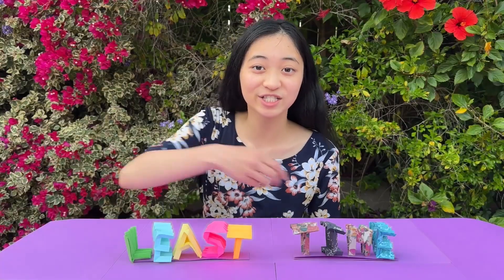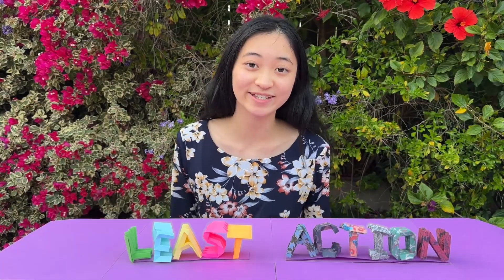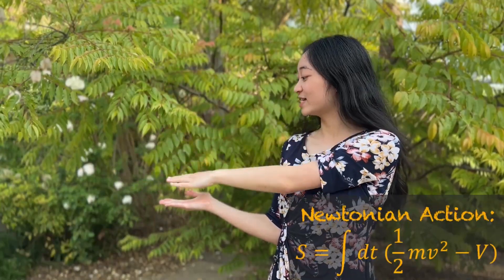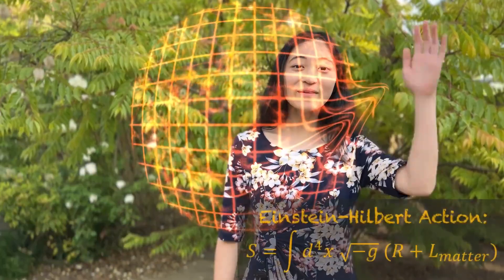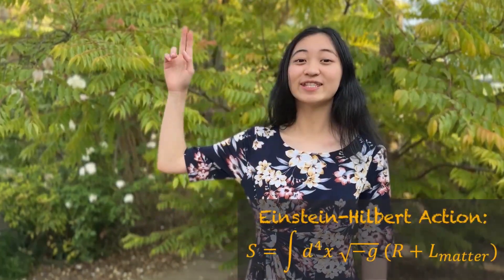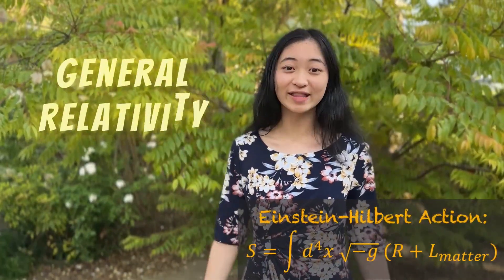This concept was later generalized to the principle of least action. By minimizing the difference between kinetic and potential energy, we can derive all equations from Newtonian mechanics. Minimizing the curvature of space-time gives us Einstein's general theory of relativity.